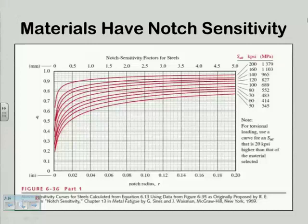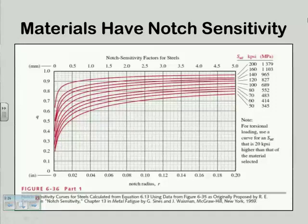The notch sensitivity is a material property, and it turns out that some materials are more sensitive than others to the presence of a notch, i.e., a stress concentration. 'Notch,' by the way, is used universally in this business to represent any disruption in contour — a little groove, a little fillet, whatever. It's called a notch. It doesn't have to literally be a notch to be called a notch.